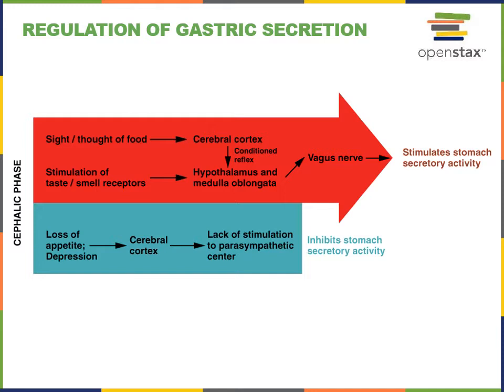In contrast, loss of appetite or depression can lead to decreased parasympathetic activity and increased sympathetic activity, inhibiting gastric juice secretion.